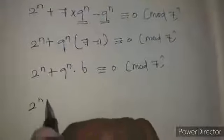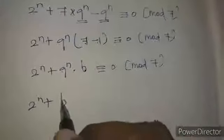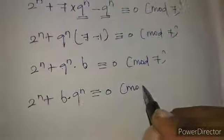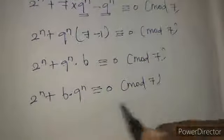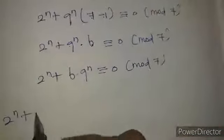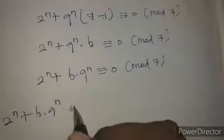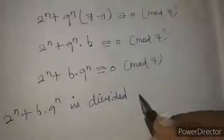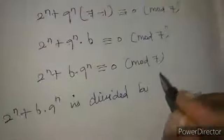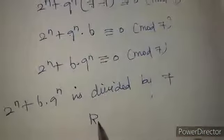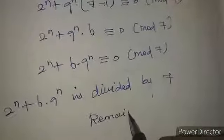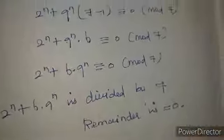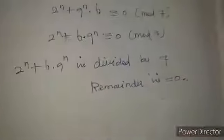Therefore, 2^n + 6·9^n is congruent to 0 mod 7. This means 2^n + 6·9^n is divisible by 7, with remainder 0.